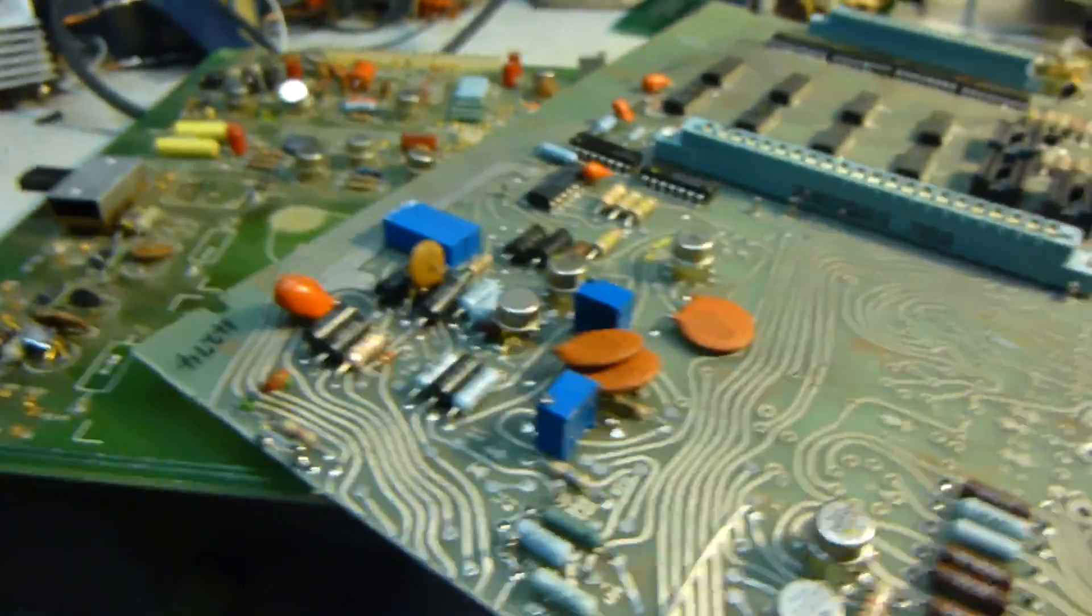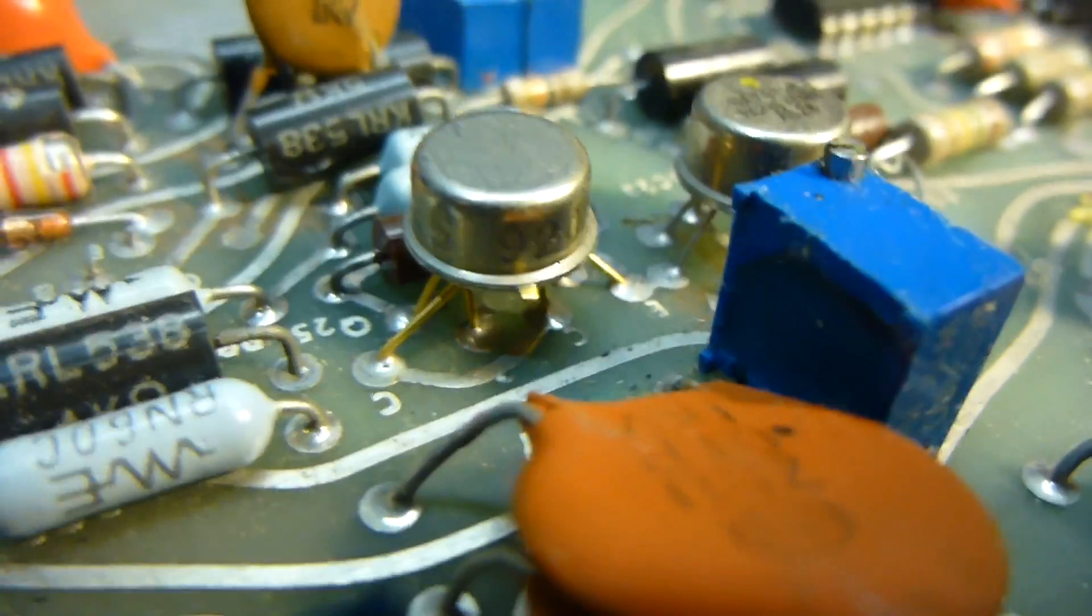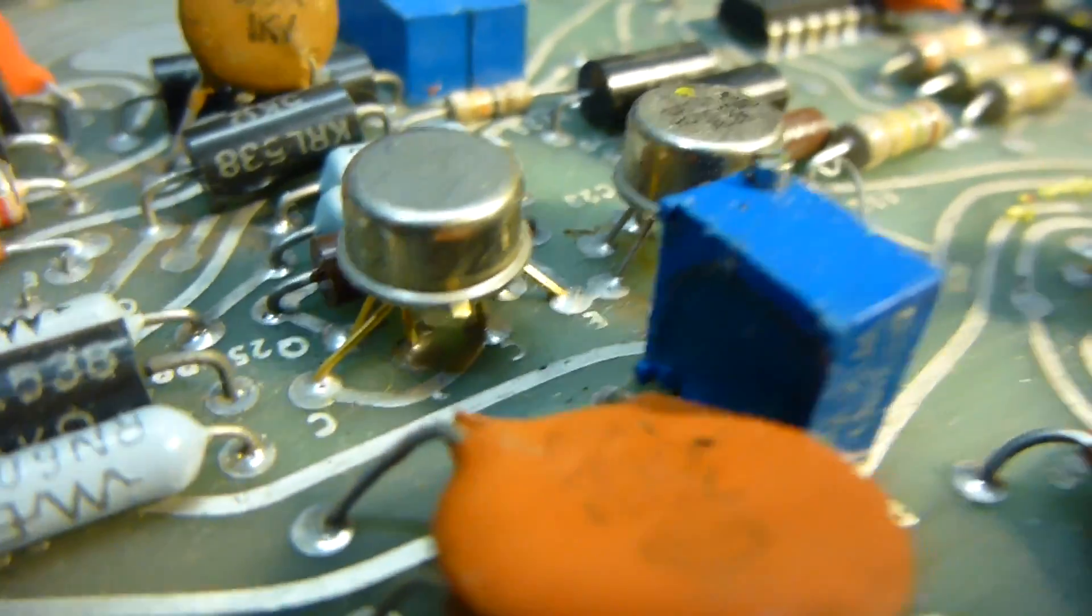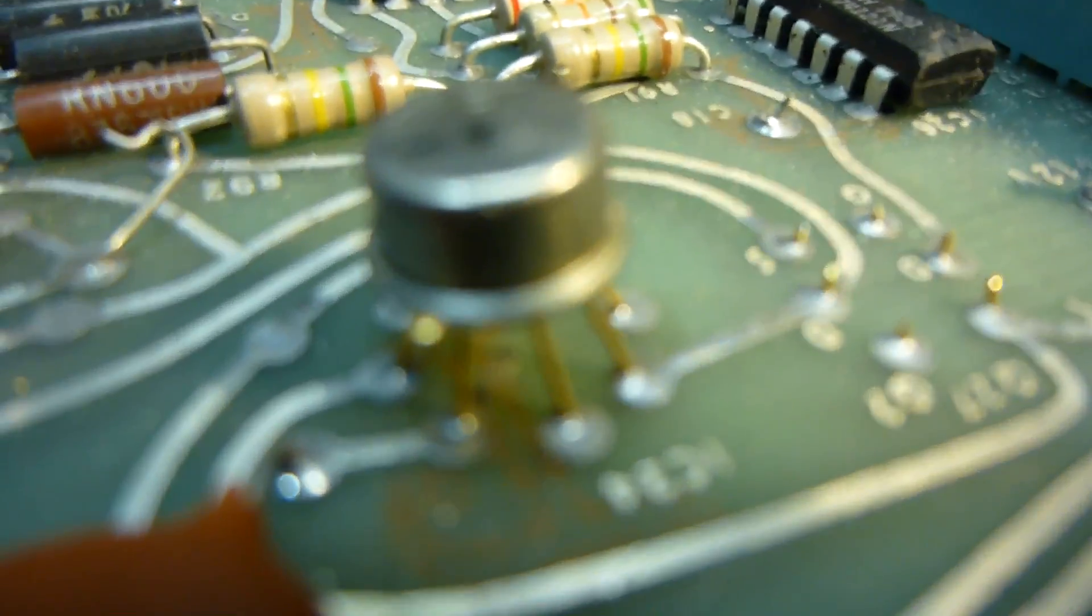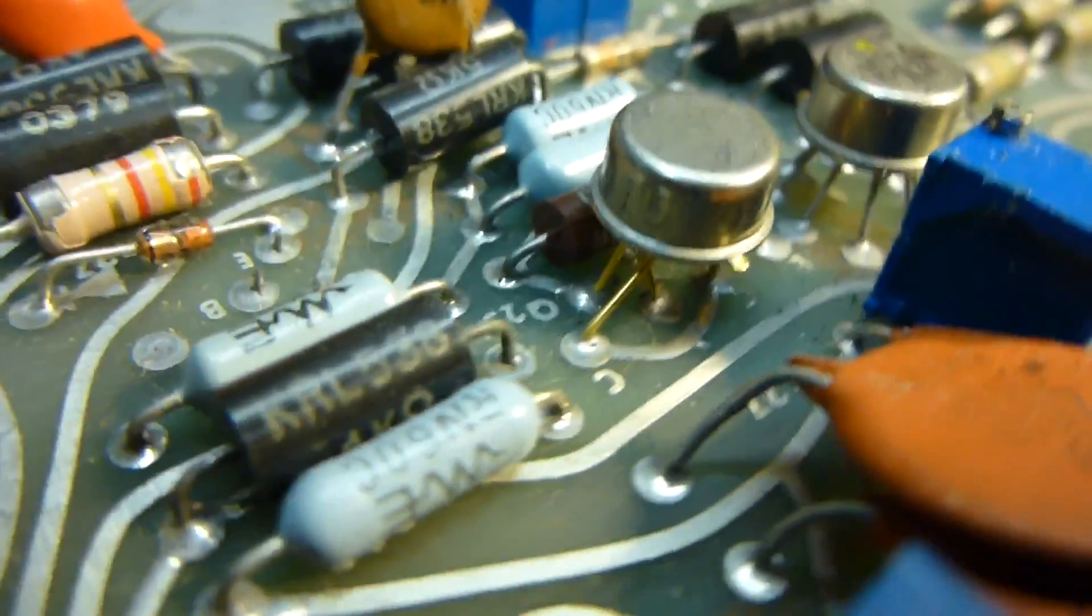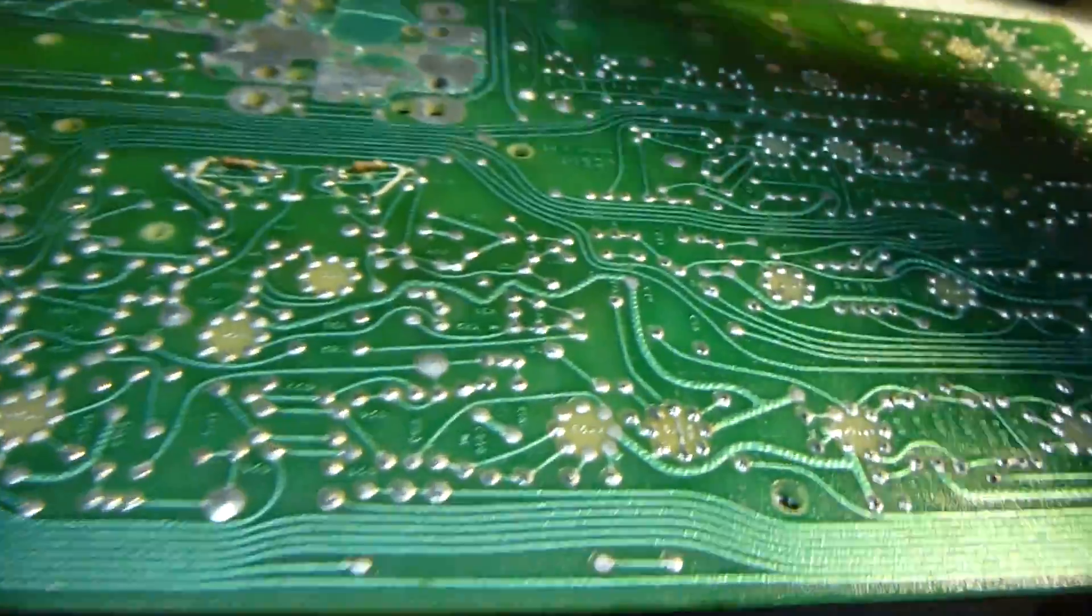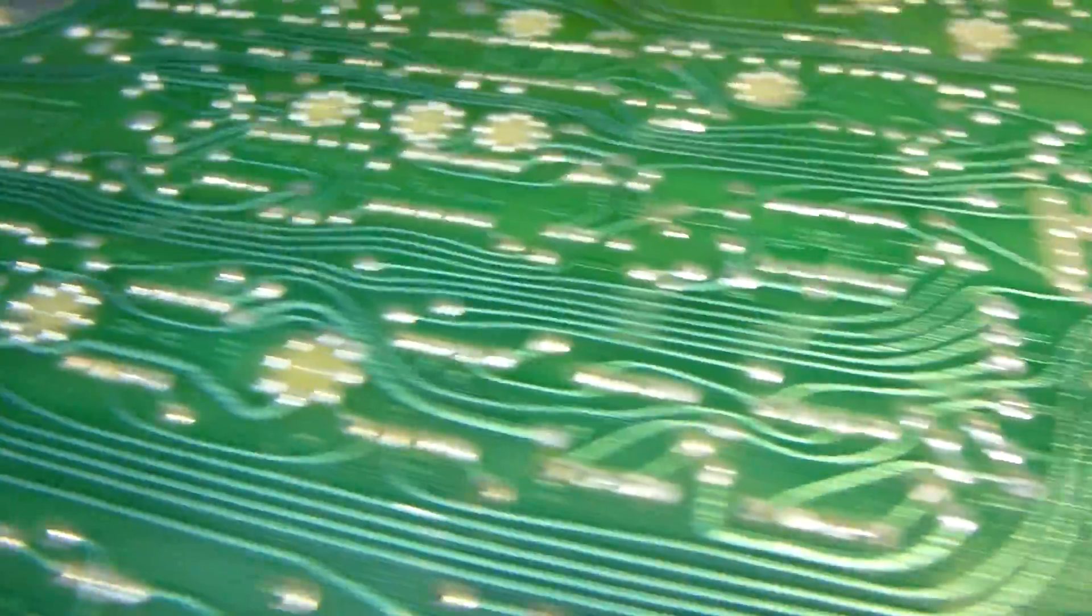Okay this other board here, you can obviously see that the components were put on by hand because if you look at this metal can IC here, you can see the leads are not all in a circle like this one. Somebody painstakingly bent the leads so they'd fit into the holes. So that must have taken somebody a lot of work. A lot of the components are not populated on here for some reason.